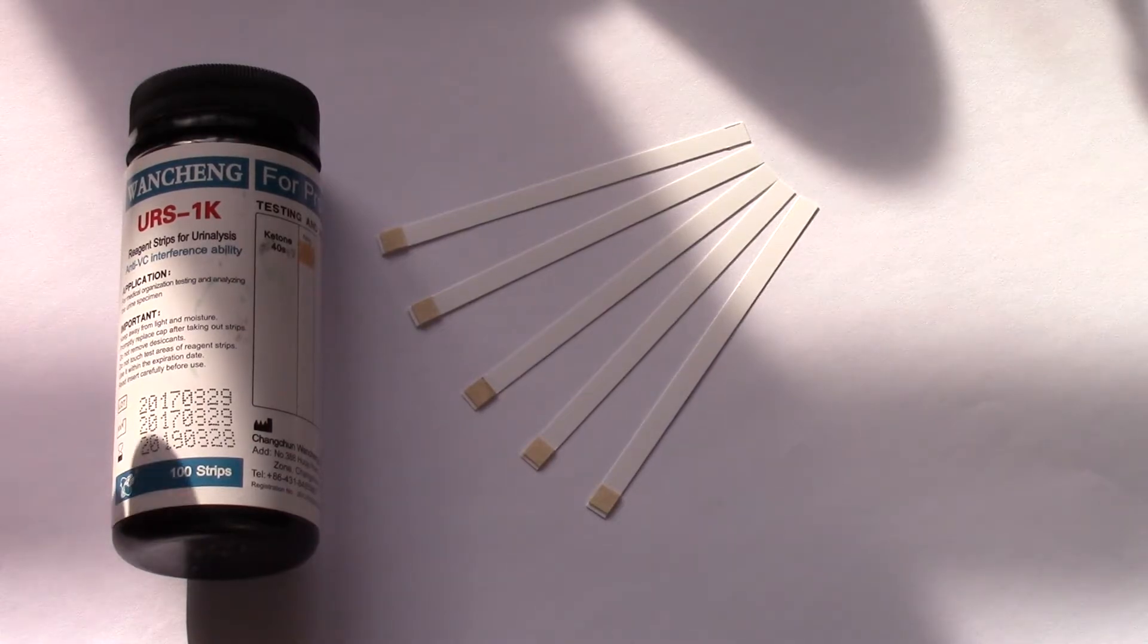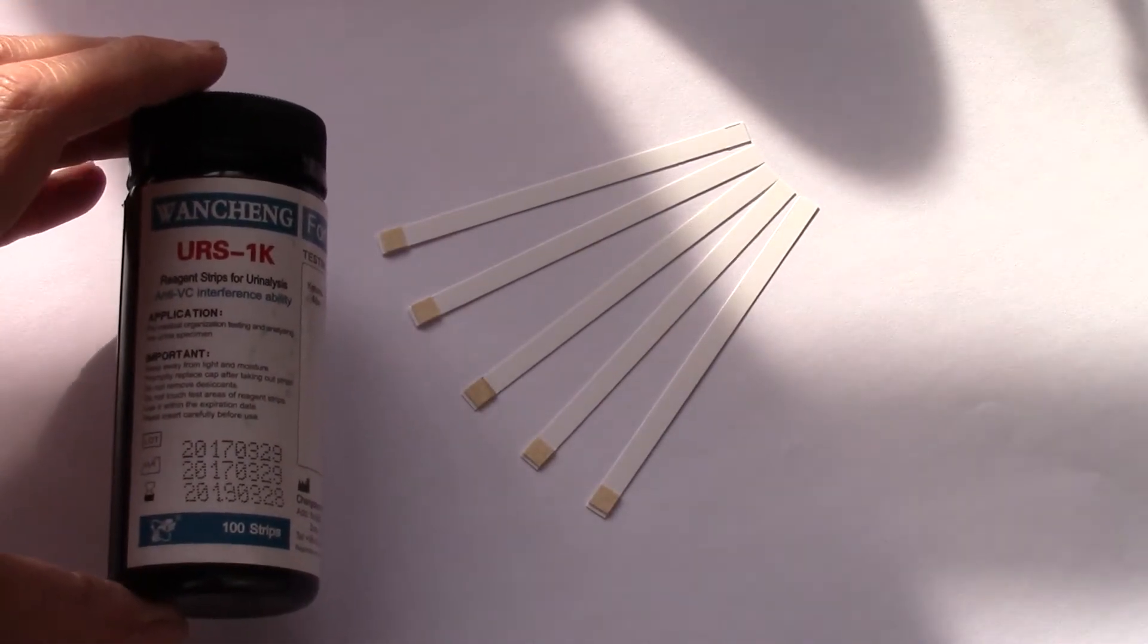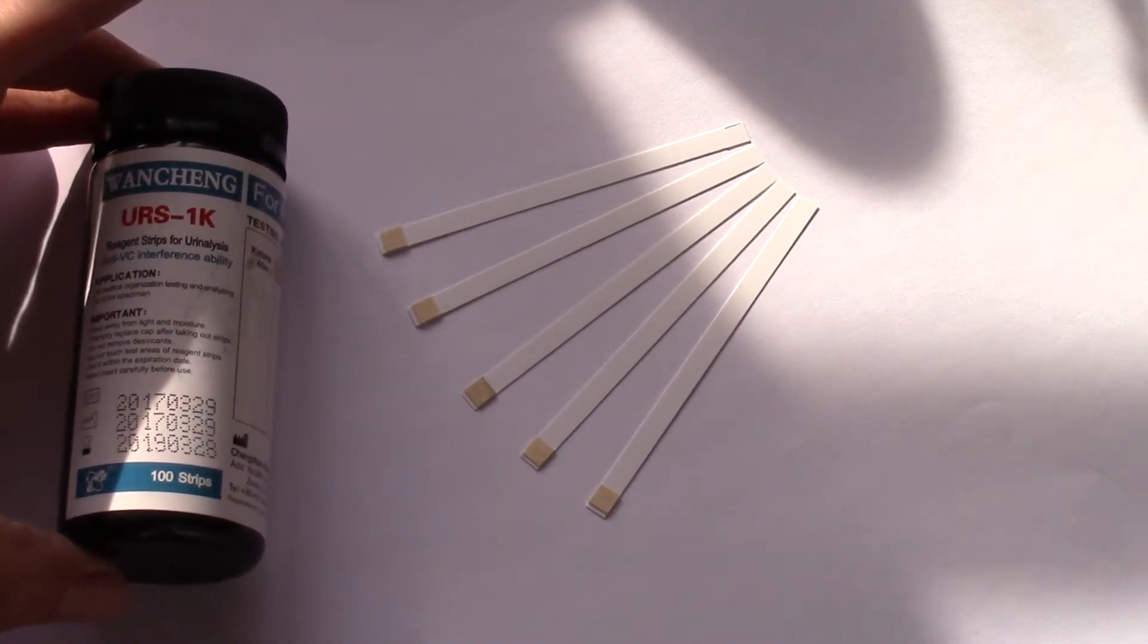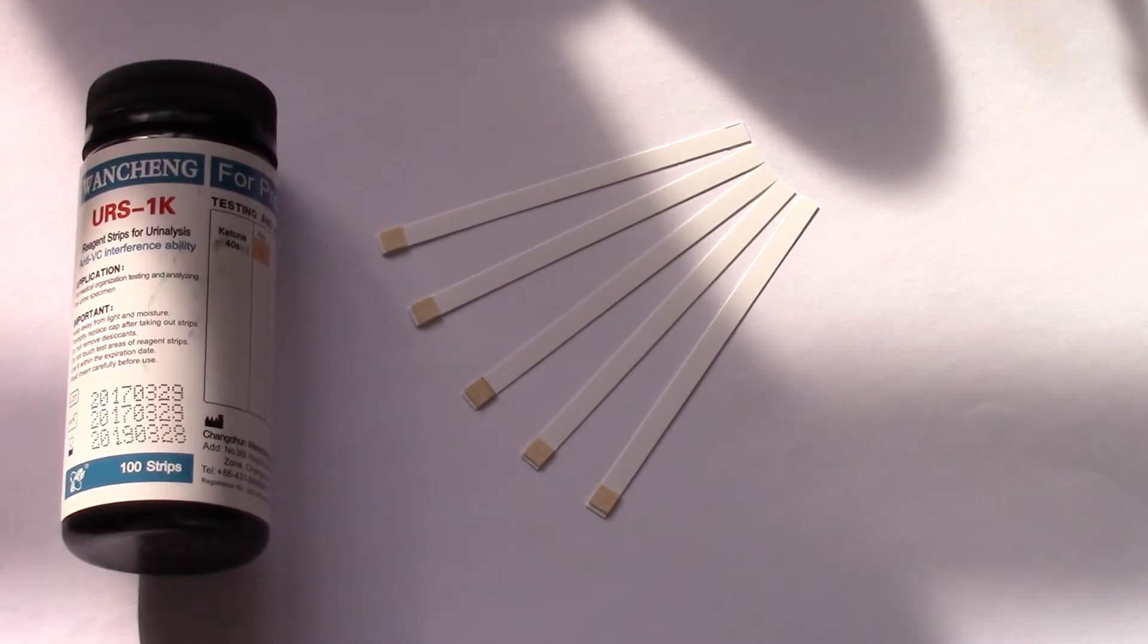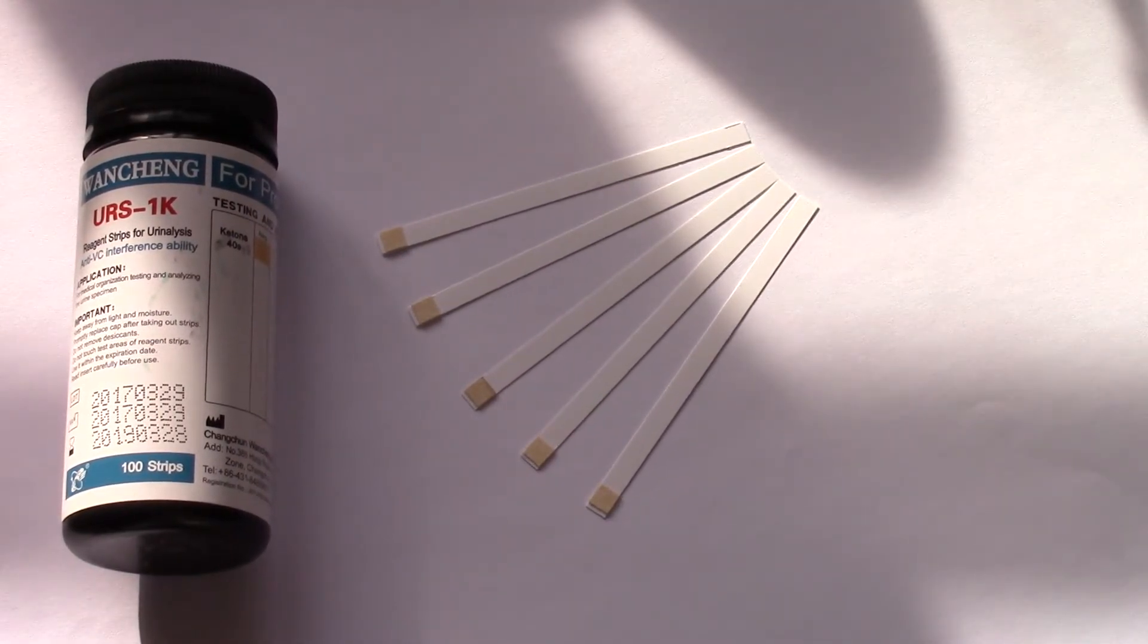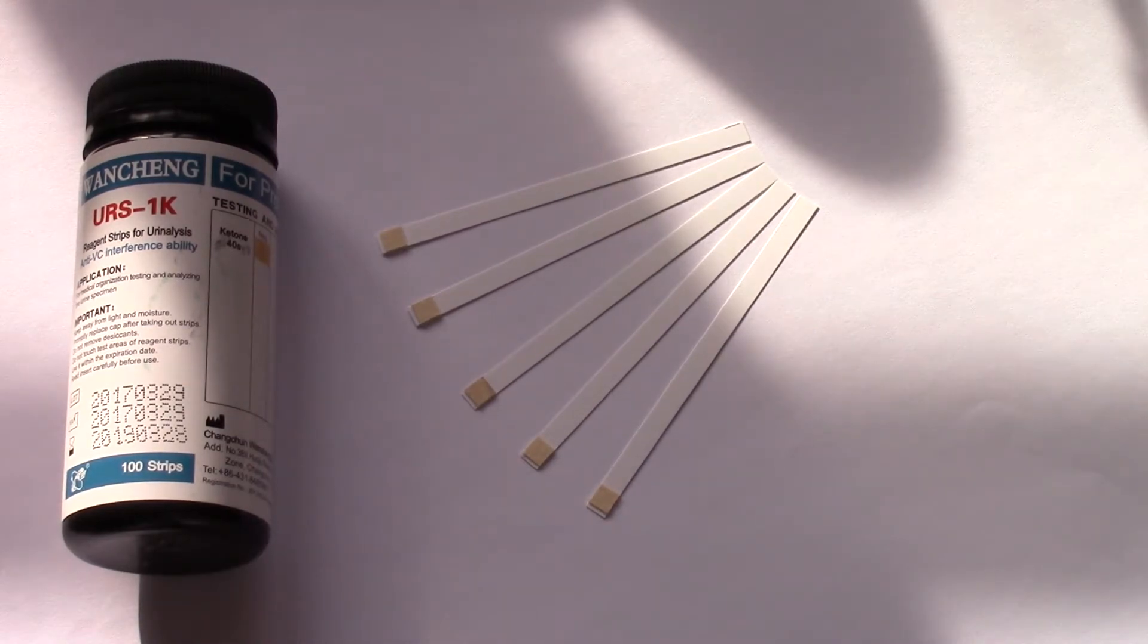Now, these test strips are universally available, usually in pots of 100. This particular pot that we're showing you here is from Wang Cheng. The code that is used almost universally by manufacturers is URS1K, saying it's a urine reagent strip, a single one ketone pad. So on these pads you can see displayed here for you, you've got the starting or dry colour test condition of the pad, which is almost across all brands, a universal fawn or light brown colour.